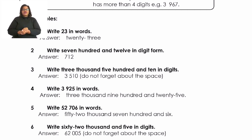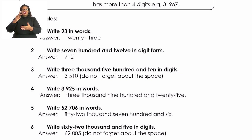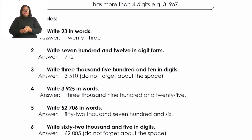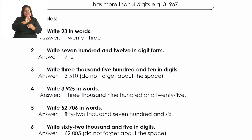Let's try another example. Write seven hundred and twelve in digits. They gave me the words seven hundred and twelve and they want me to write it in digits. When we write numbers in digits, we start from the biggest number we hear. The biggest number is seven hundred, so we write seven hundred, and then we also hear twelve, so we write the twelve.